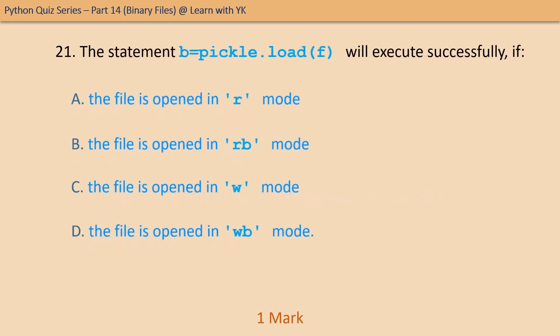Question number twenty-one: the statement b = pickle.load(f) will execute successfully — what is the condition for this statement to be executed successfully? Choose the correct option. The correct option is option B — if the file is opened in rb mode.